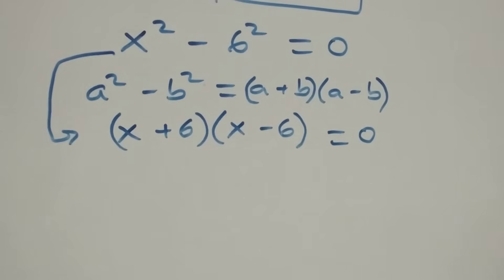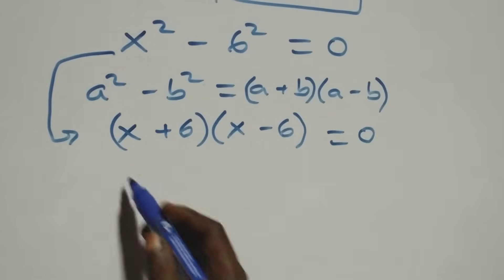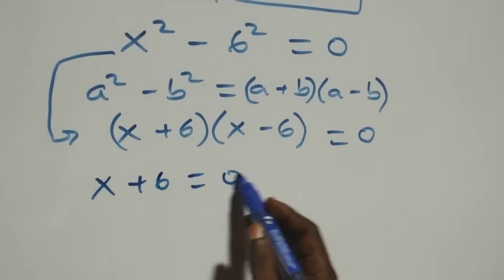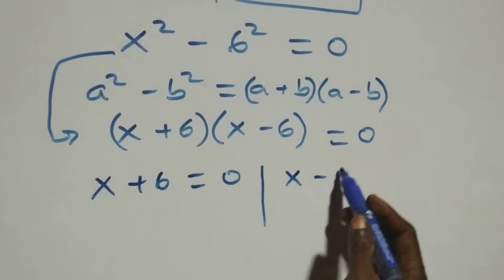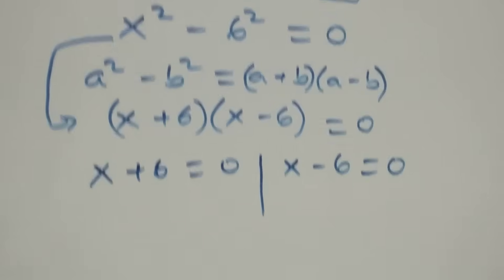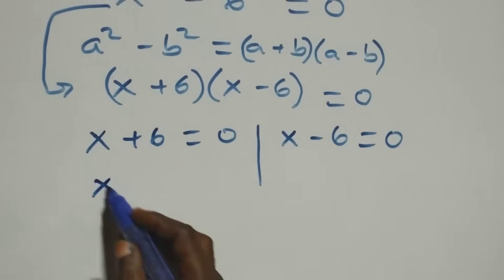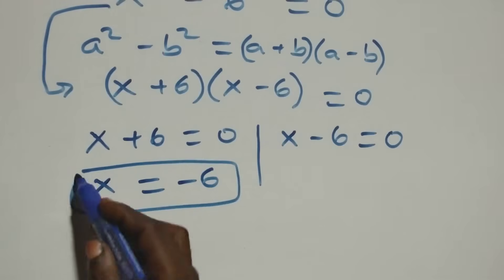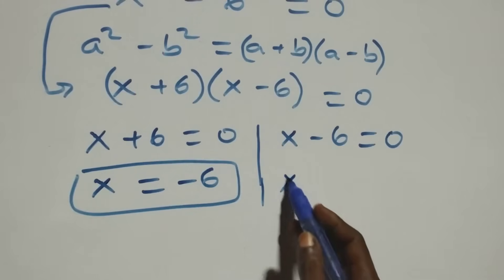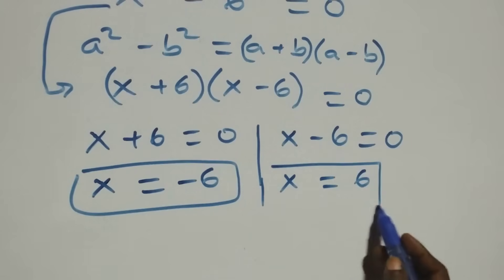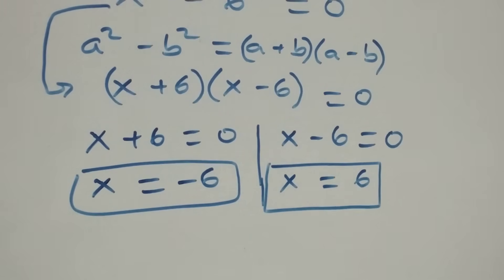We have two possible cases: x + 6 = 0 or x minus 6 = 0. From these, x equals minus 6, which is a real solution, and x equals 6, which is also a real solution. Altogether, we have four solutions to this problem.